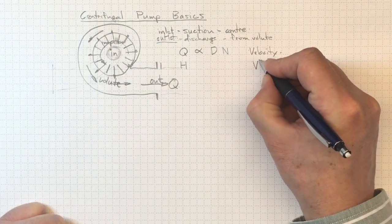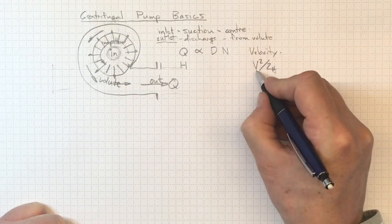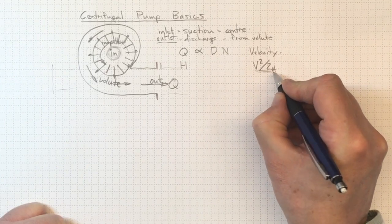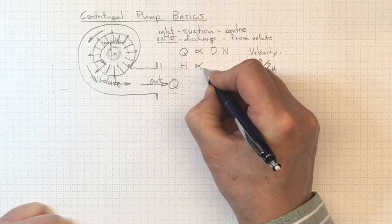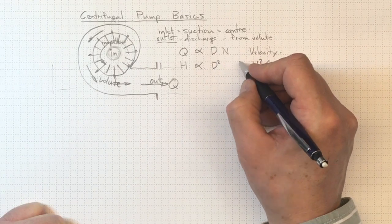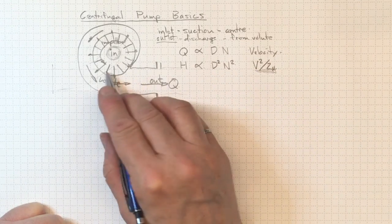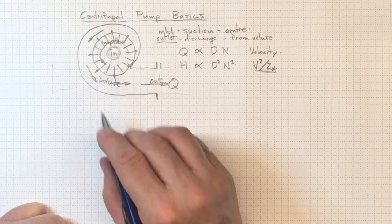It's a dynamic pump, so Bernoulli's equation is going to be important. And we're going to see head proportional to size squared or speed squared. So those are going to go up even more if we increase the size or the speed of the pump.